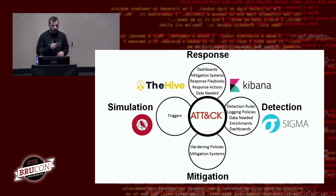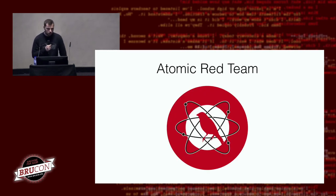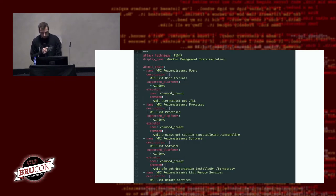Regarding those four pillars, we have entities related to each. For simulation, we decided to use the Atomic Red Team project, which was already mentioned yesterday. It is a tool for adversary emulation with execution frameworks, so you can define a list of tests to execute and quickly run them on a test system to check what you can detect or mitigate. Each trigger has a mapping to MITRE ATT&CK, which is really important, and the tests consist basically of commands to be executed on test systems.